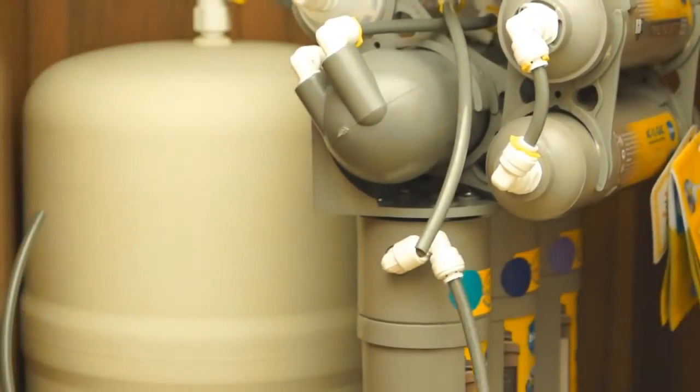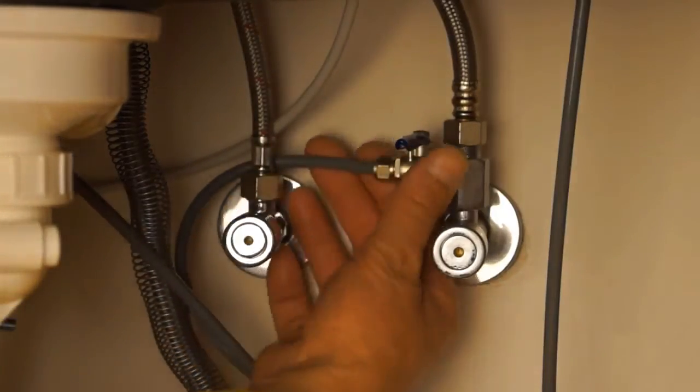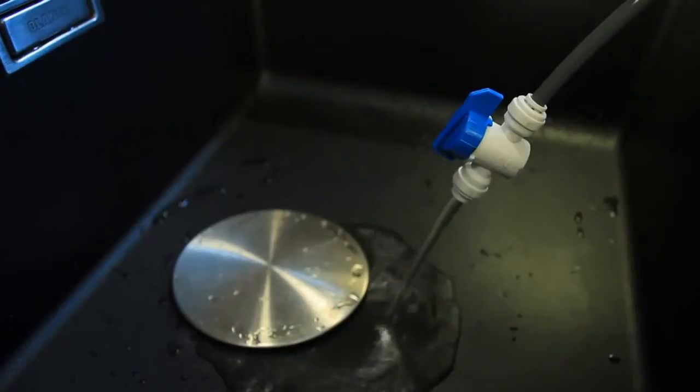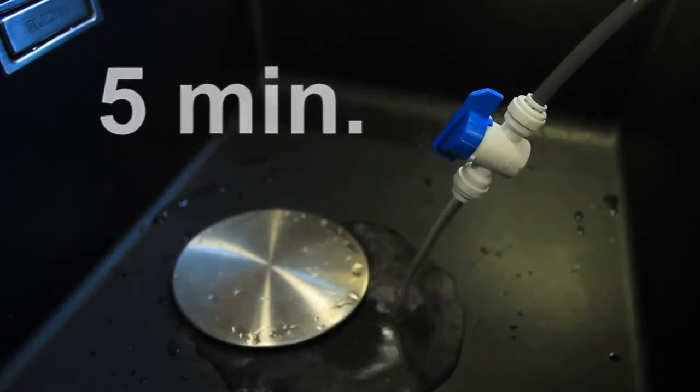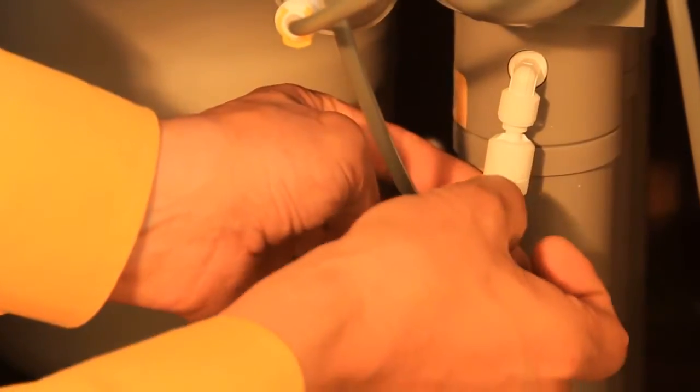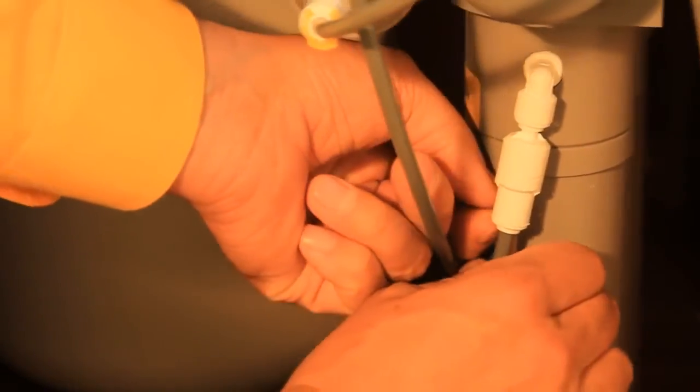To rinse the system, disconnect the additional tube and put its end into the sink. Open the water feeder valve. Rinse the pre-filters for approximately 5 minutes. Remove the disinfection cartridge and plug in the water feeder tube.